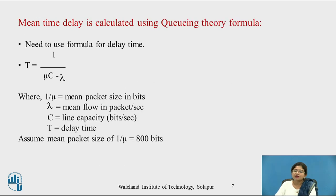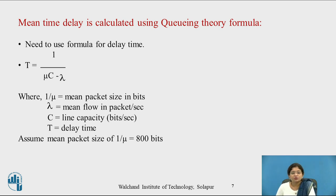Now, to calculate the mean time delay, we use the queuing theory formula: T = 1 / (μC − λ), where 1/μ is the mean packet size in bits, λ is the mean flow in packets per second, C is the line capacity in bits per second, and T is the delay time. We assume a mean packet size of 1/μ = 800 bits, since we are going to calculate the delay time for packets of 800 bits.